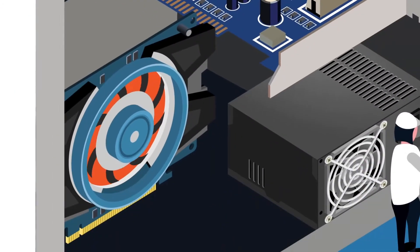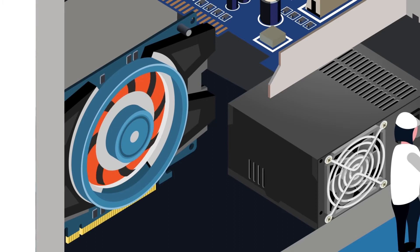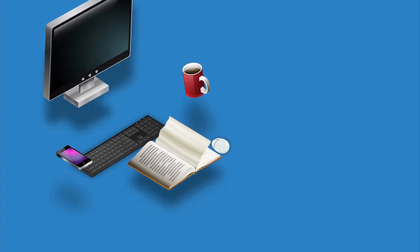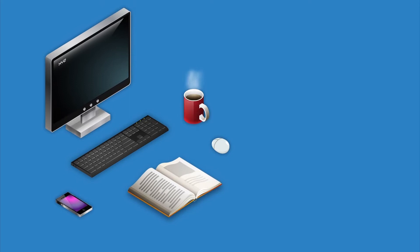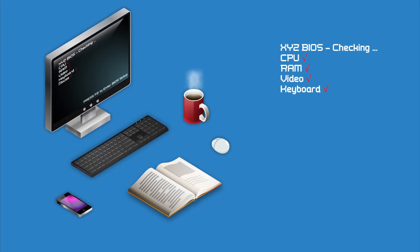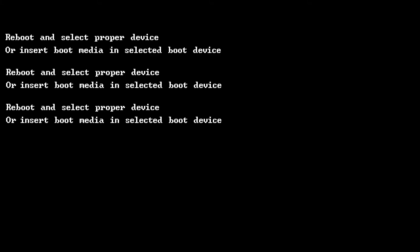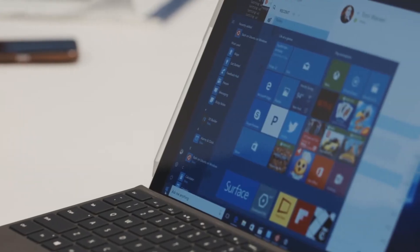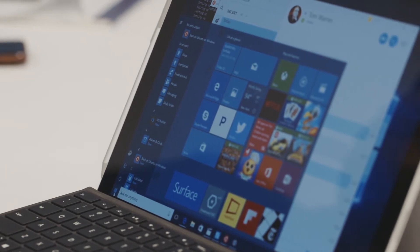So when you turn on your PC, the first thing that starts up is the BIOS. It checks your settings, how you want to run your PC, and then initializes the peripherals like CPU, RAM, and graphics card. After that, BIOS runs the power-on self-test to make sure everything is functioning correctly. Once that's done, the BIOS searches for a bootable device — some kind of drive which has an OS installed. After that, the OS boots up and takes care of the rest.